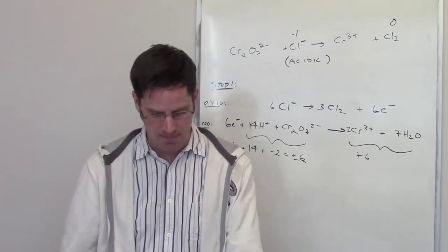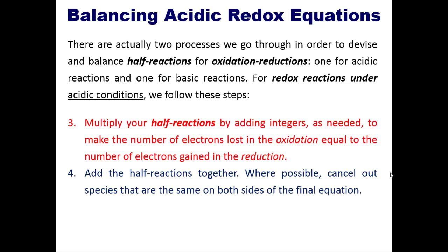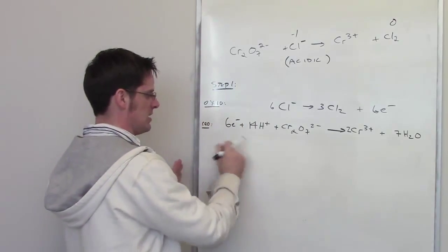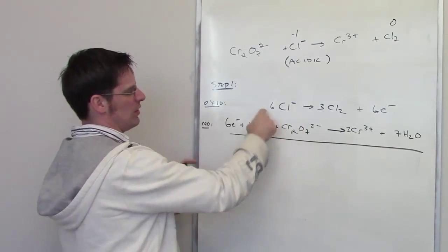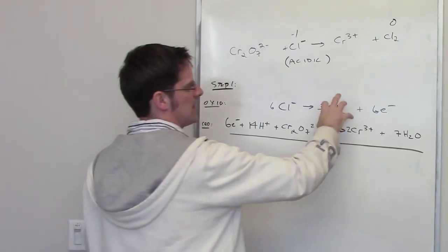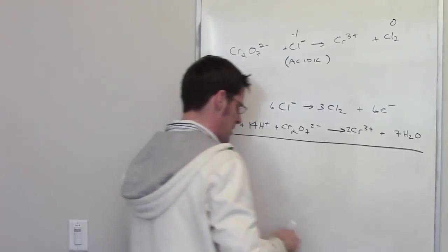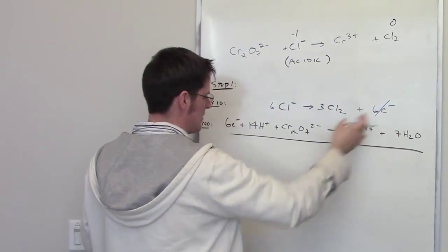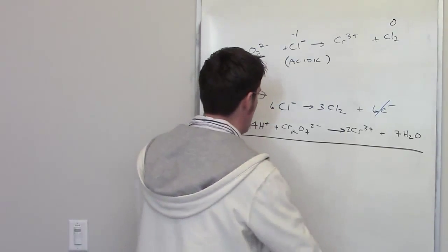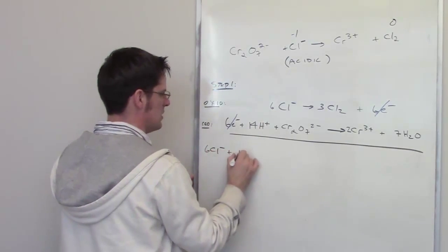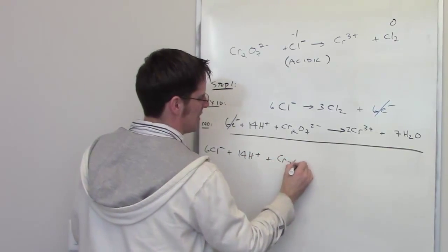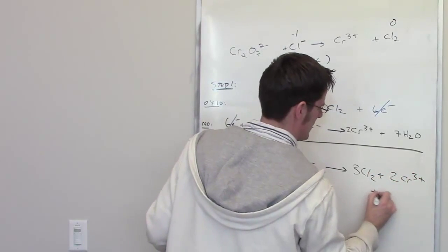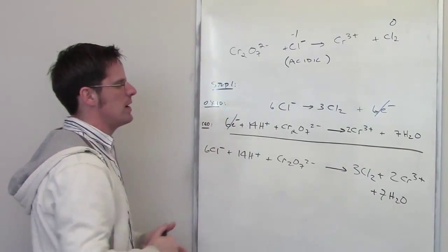The next step says add the half-reactions together and cancel out species that appear on both sides. Right away, the 6 electrons on the right side of the oxidation equation cancel with the 6 electrons on the left side of the reduction equation. Adding everything together gives: 6 Cl⁻ + 14 H⁺ + Cr₂O₇²⁻ → 3 Cl₂ + 2 Cr³⁺ + 7 H₂O.